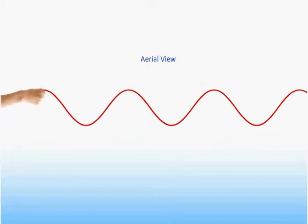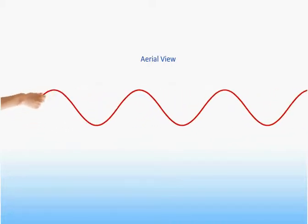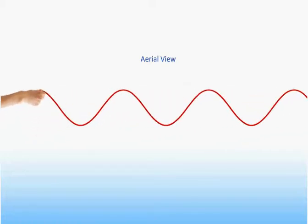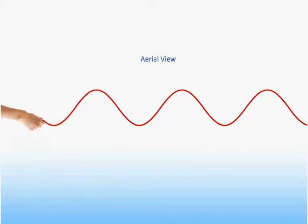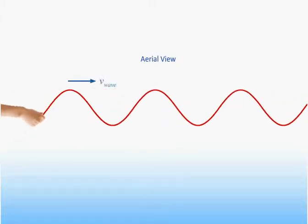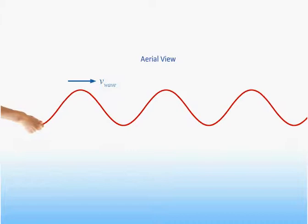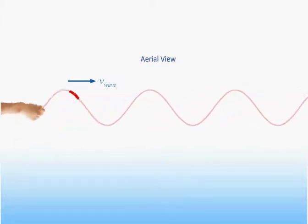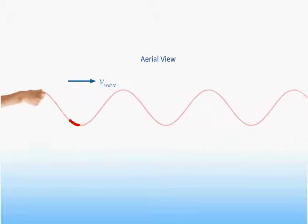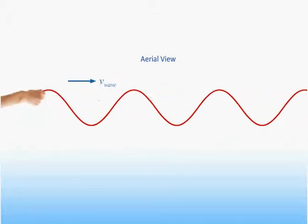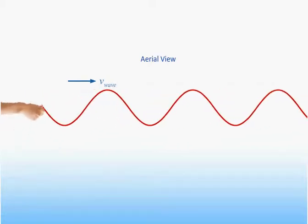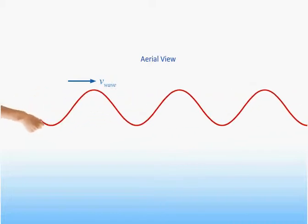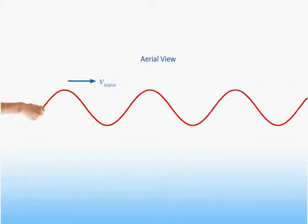This simple picture captures the essence of the physics we will be studying for the rest of this pre-lecture as well as the next. The key observation is that even though there is clearly a pattern or a wave that keeps moving along the string to the right, the string itself is not going anywhere. Any part of the string that we focus on just moves back and forth about a stationary equilibrium position. The string is merely the medium through which the wave travels. Indeed, we will soon see that the speed of the wave is determined totally by the characteristics of the medium.